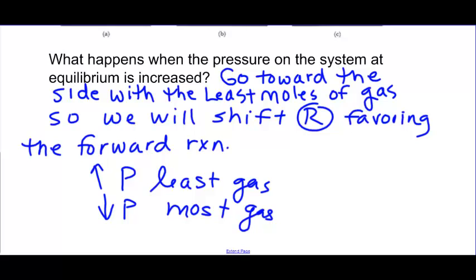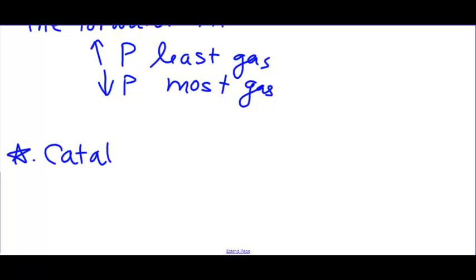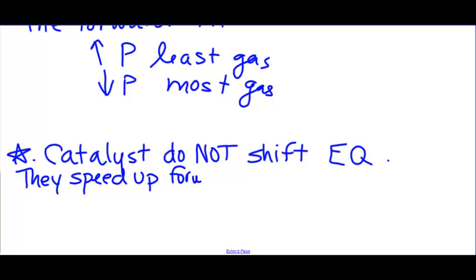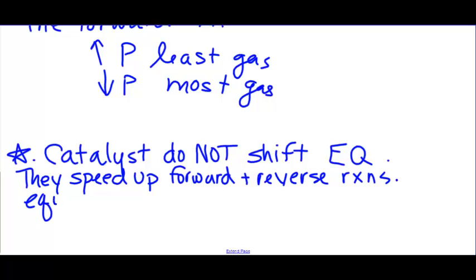Sometimes they ask you about a catalyst. Catalysts do not shift the equilibrium — they speed up the forward and reverse reactions equally. So addition of a catalyst will not cause the equilibrium to shift. The forward reaction will go faster and the reverse reaction will go faster. That's all that means.